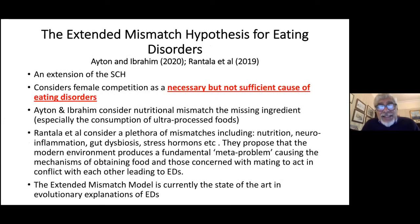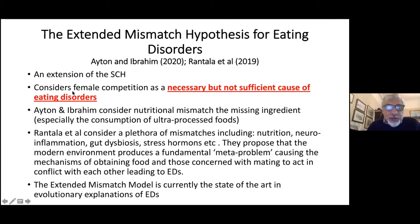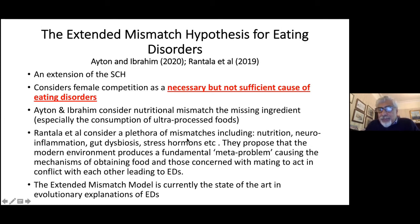Just a word about the extended mismatch hypothesis of eating disorders. Two groups — one from the UK, Aitin and Ibrahim, and another from Finland and Australia — have proposed an extension to the sexual competition hypothesis. These models consider that female competition is a necessary but not sufficient cause of eating disorders. Aitin and Ibrahim consider nutritional mismatch to be the missing ingredient, especially the consumption of ultra-processed foods.